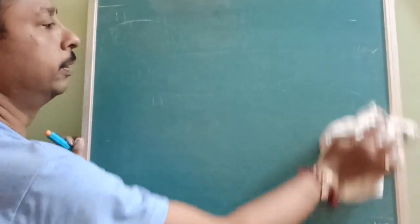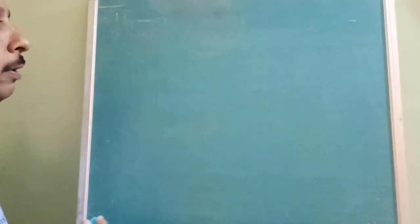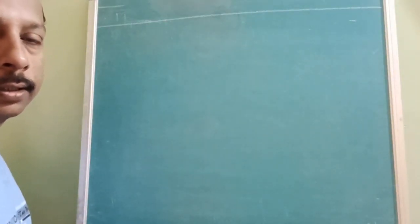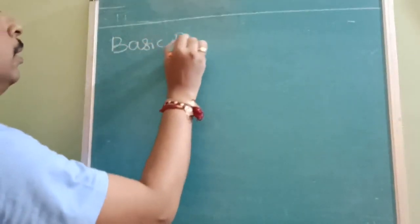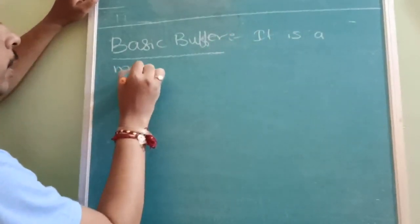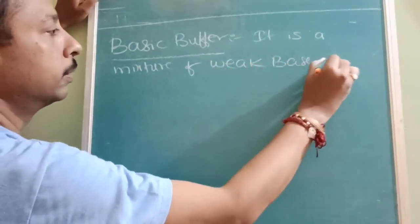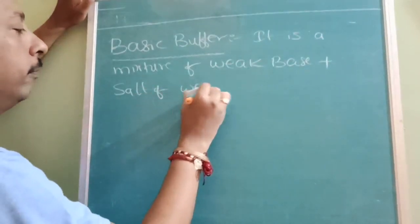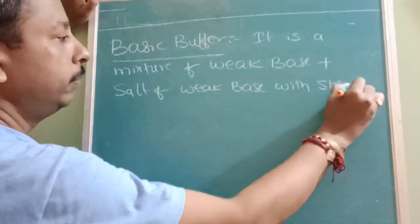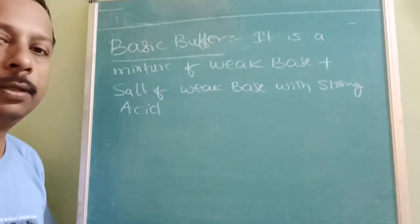Now we are going to study about the basic buffer. Basic buffer is also a mixture — mixture of weak base plus salt of the same weak base. But this time we should use the strong acid. There it was strong base; now here we are going to use the strong acid. It is a mixture of weak base plus salt of weak base with the strong acid.